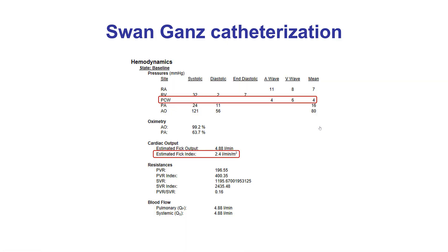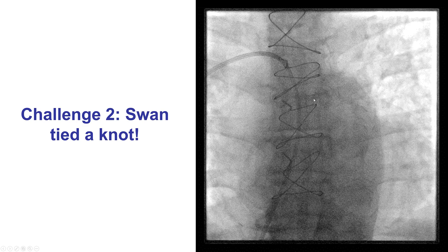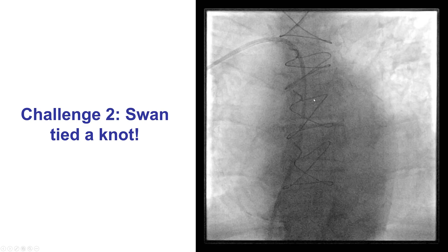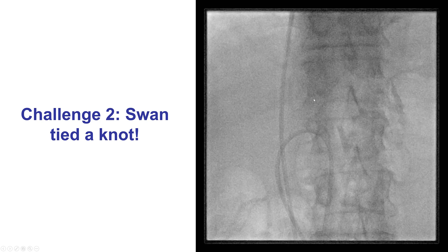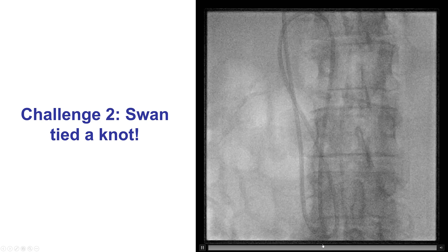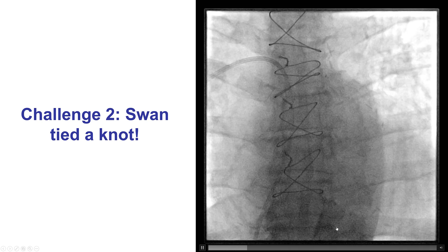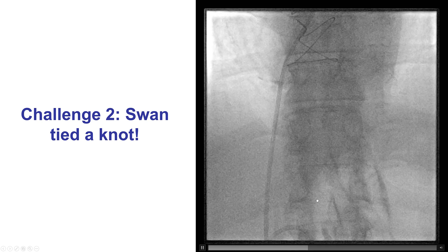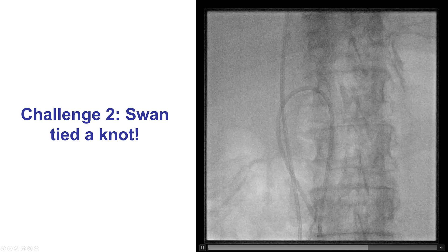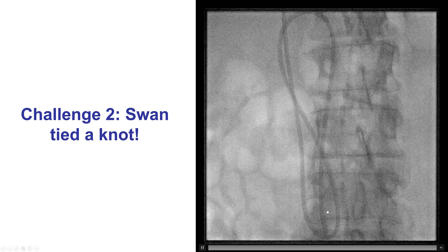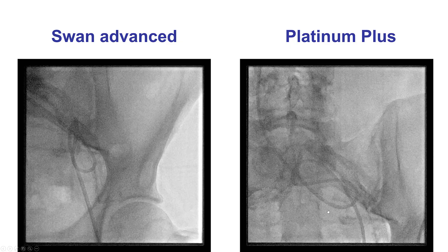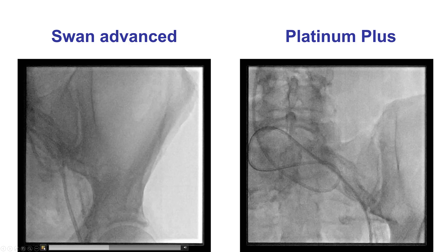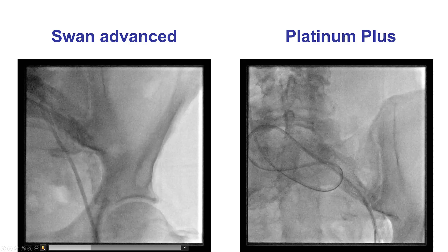We then performed right-heart catheterization to determine the need for hemodynamic support given the complexity of the procedure. However, the patient's wedge pressure was only 4, so a decision was made to not use hemodynamic support. The problem, though, was when trying to remove the Swan-Ganz catheter, there was a knot created at the mid-segment due to multiple manipulations that were needed to advance it into the wedge position. We tried to pull it out, but the knot came to the sheath and could not be removed.